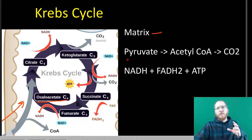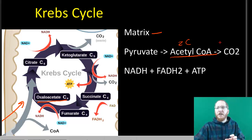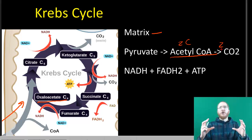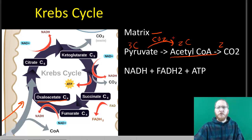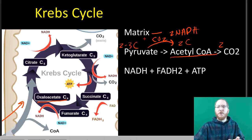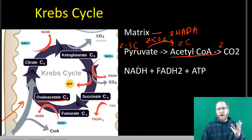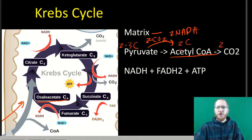The Krebs cycle technically takes acetyl-CoA, a two-carbon compound, and breaks it down into two CO2s. But there's a step that occurs right before the Krebs cycle where pyruvate, a three-carbon molecule, gets converted into acetyl-CoA, a two-carbon compound. That also releases CO2 and NADH. Since there are technically two pyruvates, each gives us one CO2, one NADH, and one acetyl-CoA, so there are two acetyl-CoAs total entering the Krebs cycle.